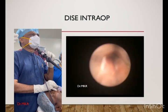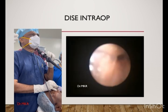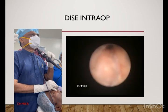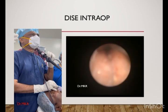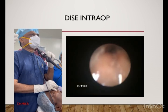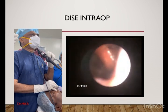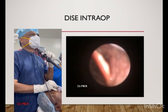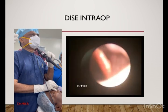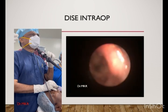Through the nasopharyngoscope, we can see the velum and the area just above the oropharynx. You can see the lumen — the posterior tongue is bulky, and the uvula is fluttering over the posterior pharyngeal wall.